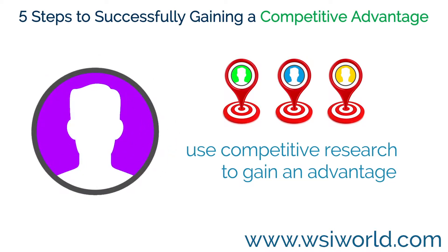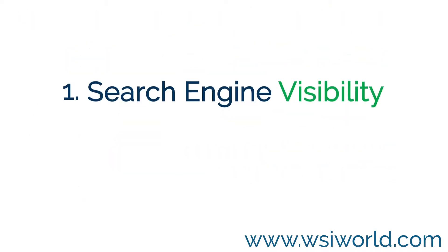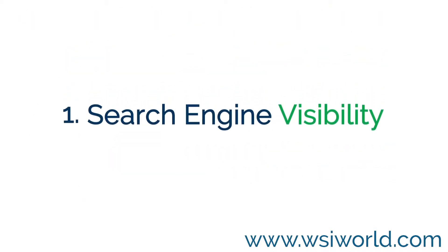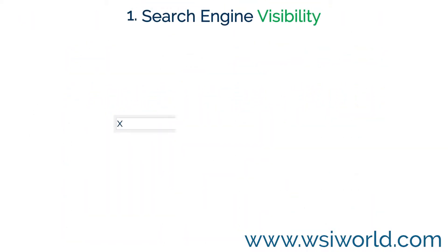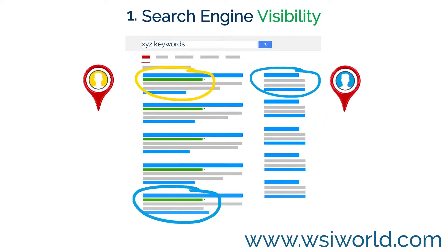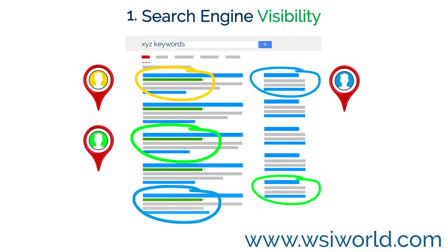Here are 5 key areas to focus on. 1. Search Engine Visibility. The first step is to identify who your online competitors are. Who is constantly achieving the best visibility across the search engines? Who has a presence on third-party websites as well as their own?